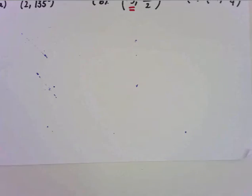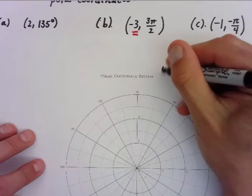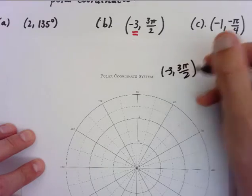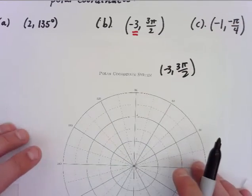Now, when we get into part B here, and we look at -3 and 3π/2, so we're going to plot -3 and 3π/2. Now, again, this angle I didn't mention before, it's a positive angle, so I'm going counterclockwise.